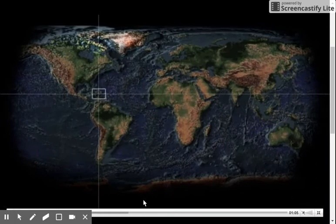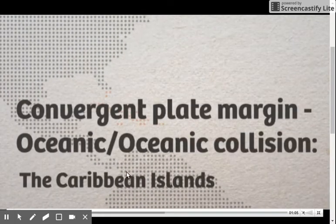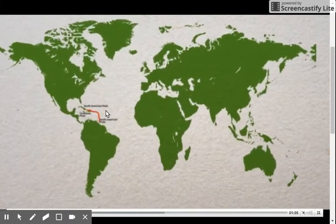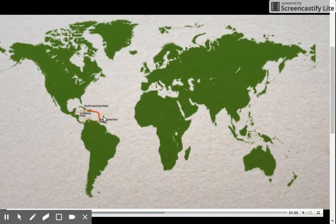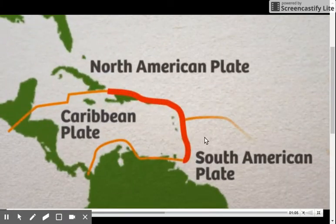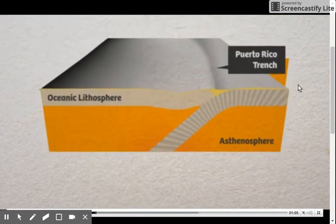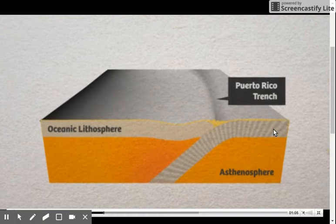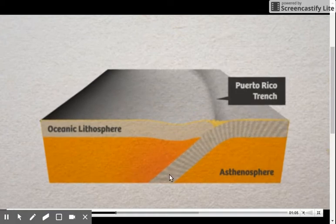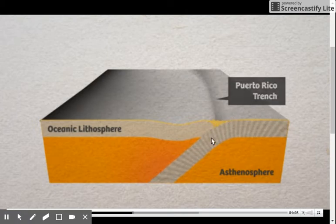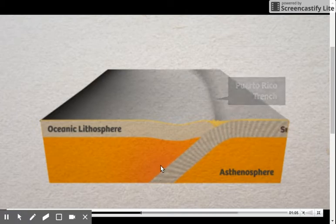When ocean collides with ocean, we get things like the Caribbean islands. We're going to look at where the South American plate is colliding with the Caribbean plate. The older, colder, denser ocean floor is being subducted, and we're forming a trench along the top — this is a subduction zone.